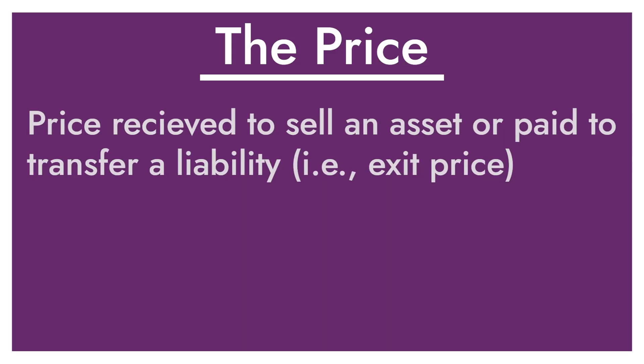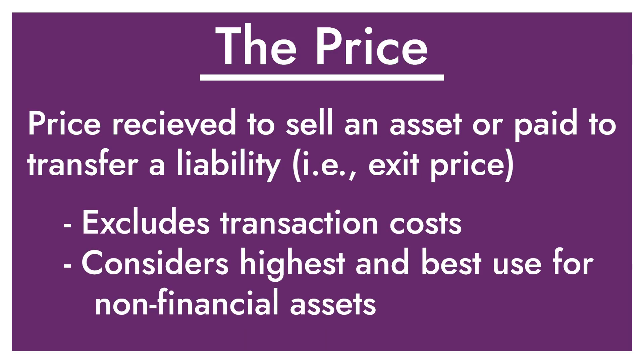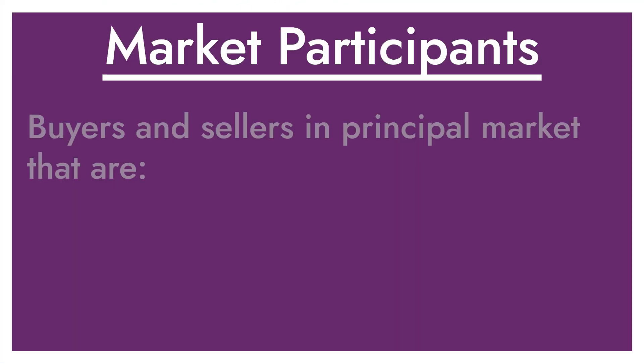That's a lot of words, but there are a couple of key things in there. First is the price — you're going to need to know what that principal market is, where a market participant would normally transact. Keep in mind that it's an exit price, so it's what a market participant would pay, not necessarily what I'm hoping to get for that asset. It's also an orderly transaction, meaning there's enough time to market and sell that asset, and you've got enough interested buyers.